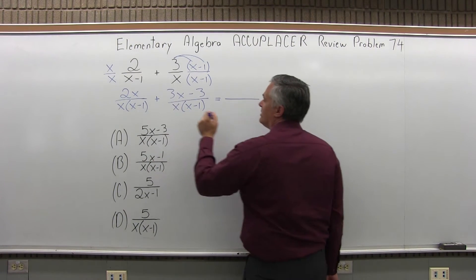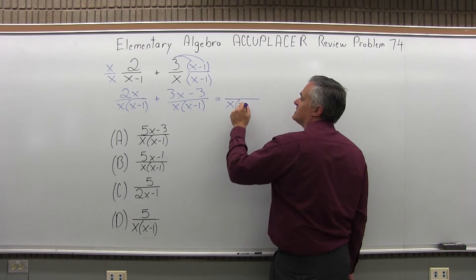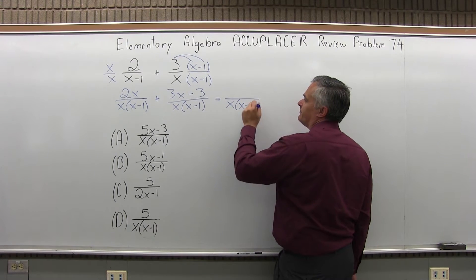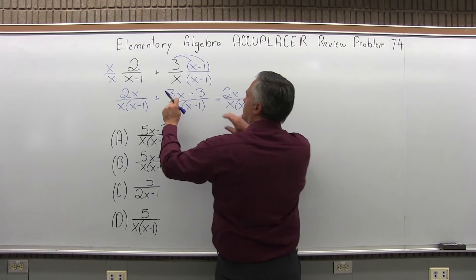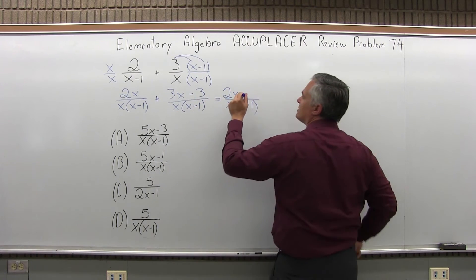So now, my common denominator is x times x minus 1. From the first fraction, I have a 2x. From the second fraction, 3x minus 3.